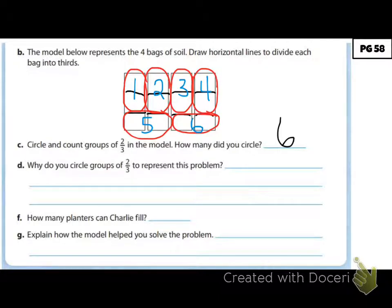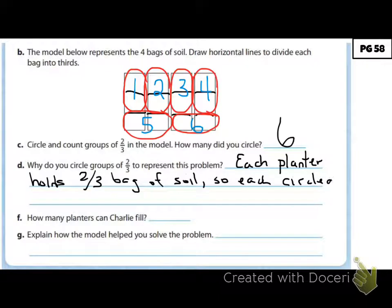So why do you circle groups of two-thirds to represent this problem? Well, each planter holds two-thirds of a bag of soil. So each circled group fills one planter.